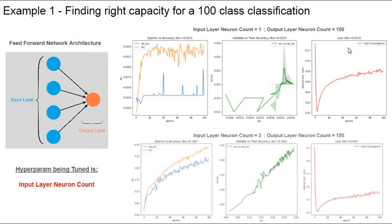When we change the input number of neurons to three, we see that epochs versus accuracy is starting to show some improvement — an overall accuracy improvement of 24%. The training and validation accuracy convergence has more smoothness, and our loss convergence properties have also improved, indicating that it only got better when the number of input neurons was increased from one to three.